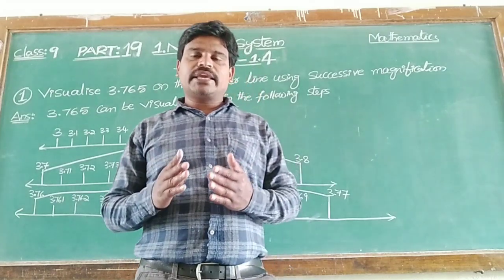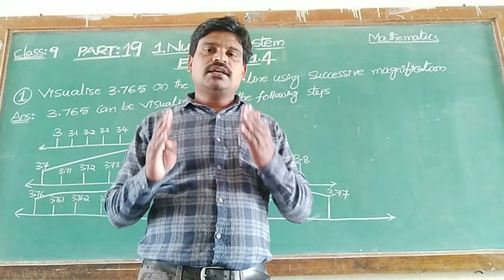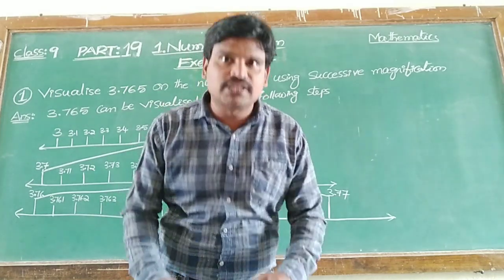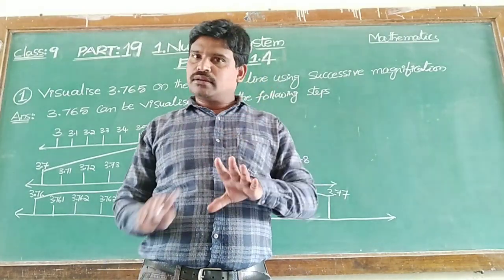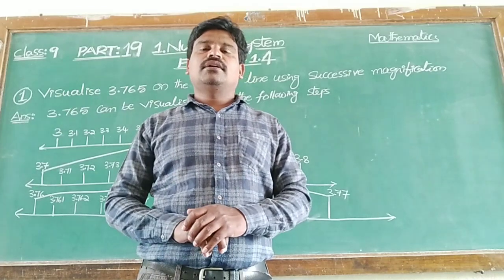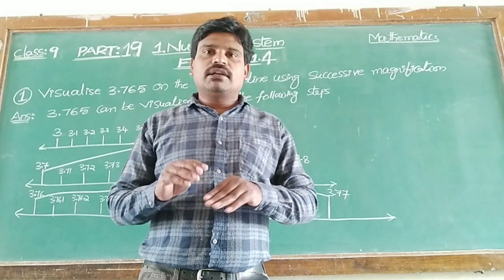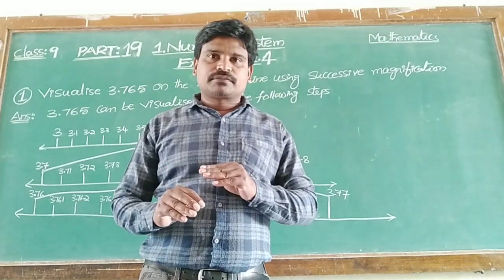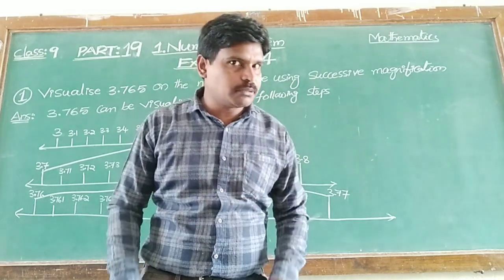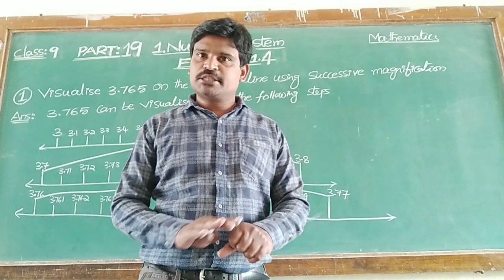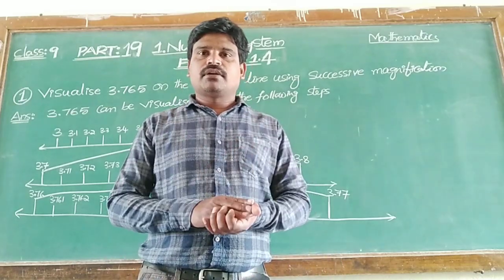We have to locate the given real number on the number line by using successive magnification. What is the meaning of successive magnification? Successive magnification means whatever real number is given — up to 2 decimal places, 3 decimal places, or 6 decimal places — the number of decimal places doesn't matter. First, we come to the whole number.